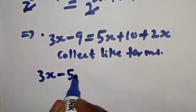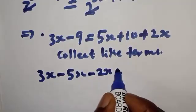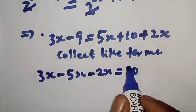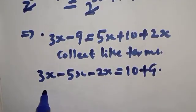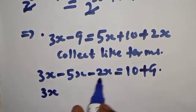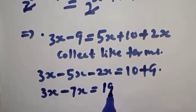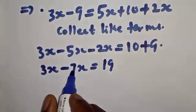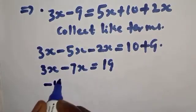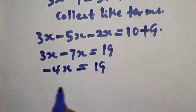Now let's collect like terms. We have 3x, and if 5x crosses to the other side it becomes minus 5x, and 2x crosses to become minus 2x. So we have 3x minus 5x minus 2x equal to 10 plus 9, which gives minus 4x equal to 19.